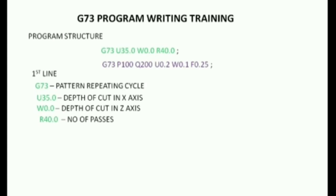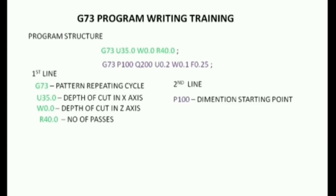We will use the 40th pass. In the first line, we will check the details. Now we will check the second line. In the second line, D73 is the quality. P100 is the starting point — the dimensions are the starting point. That is the pattern repeating cycle of the profile. Starting point P100 is the starting point.